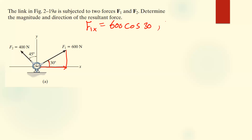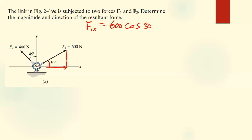For the Y component of F1, let me first find the solution for the X component. So F1 in the X is equal to 600 cos 30. Cos 30 multiplied by 600 gives us 519.6. So the solution for F1x is 519.6 Newtons.